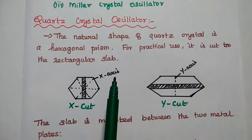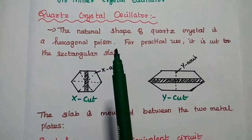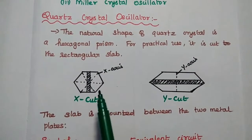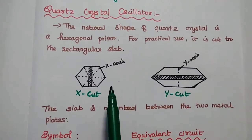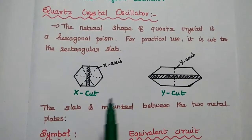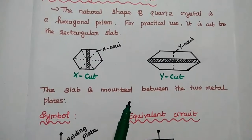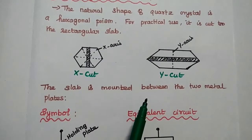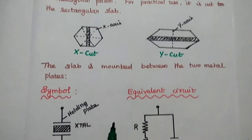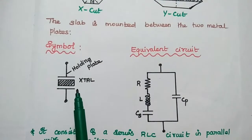The natural shape of a quartz crystal is a hexagonal prism, but for practical use, we have to cut this hexagonal shape into a rectangular slab. While cutting into a rectangular slab, there are two types of cutting methodologies used: X-cut or Y-cut. Based on the application, we can select X or Y-cut. This rectangular slab is mounted between two metal plates called holding plates.